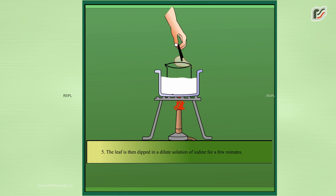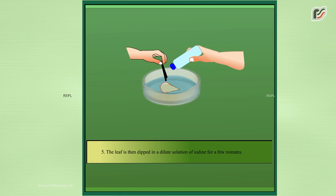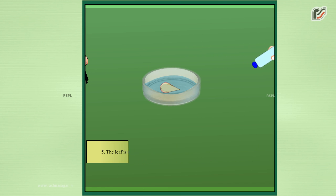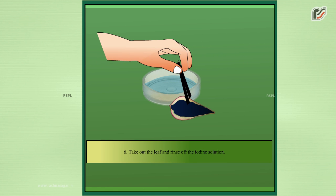The leaf is then dipped in a dilute solution of iodine for a few minutes. Take out the leaf and rinse off the iodine solution. Observe the change in color of the leaf.